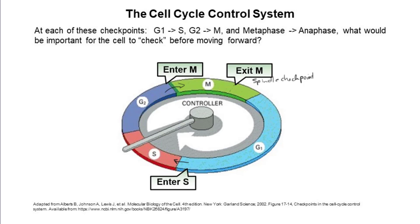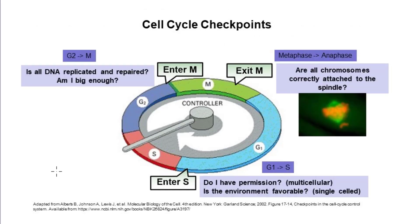At the G1-to-S phase transition, the cell is asking itself: is it appropriate for me to make more cells? In other words, do I have permission to divide — if we're talking about a multicellular organism — or can the environment support a larger population, for single-celled eukaryotes? Single cells are limited largely by environmental conditions: are there enough nutrients and are waste products low? For a multicellular organism, regulation is much more complex. Permission to divide comes in the form of growth factor signals from other cells.